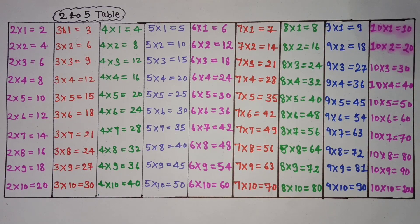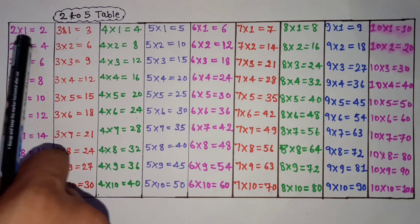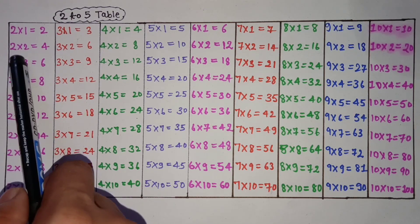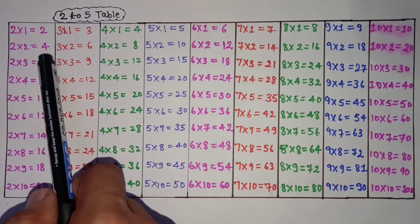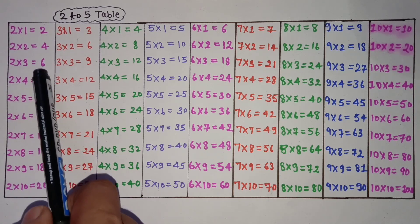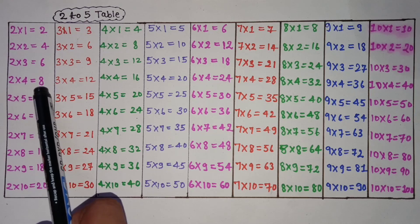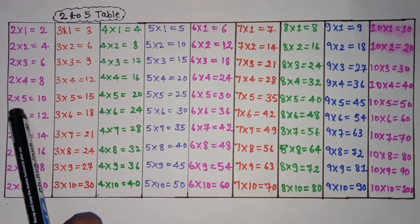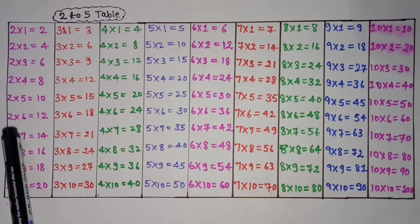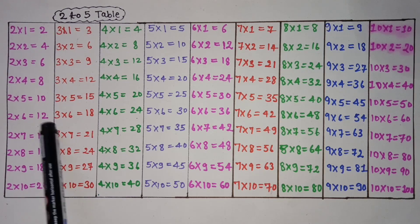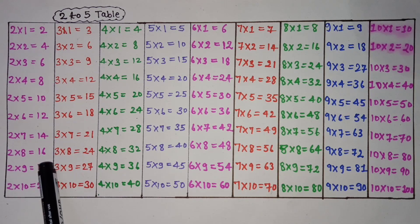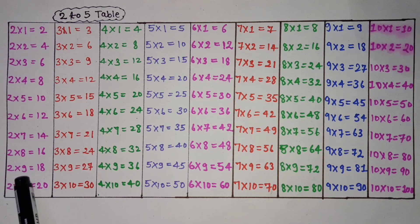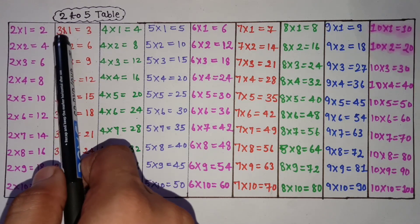2 to 20 table in English. 2×1 is 2, 2×2 is 4, 2×3 is 6, 2×4 is 8, 2×5 is 10, 2×6 is 12, 2×7 is 14, 2×8 is 16, 2×9 is 18, 2×10 is 20.